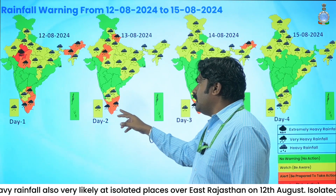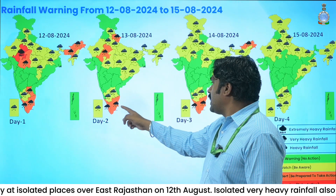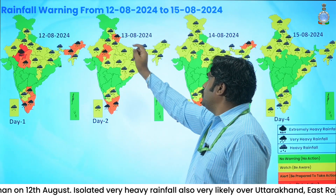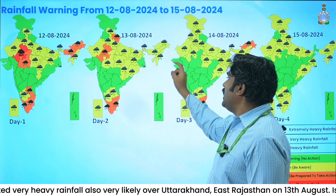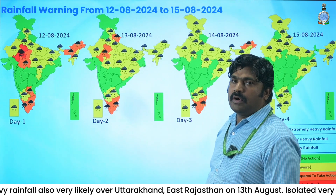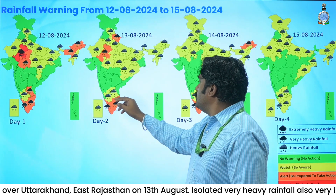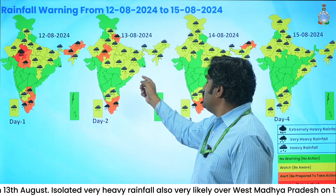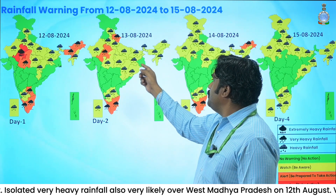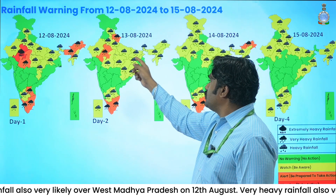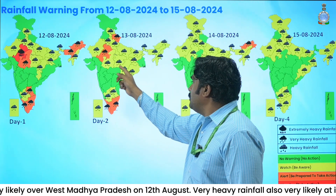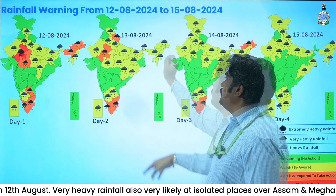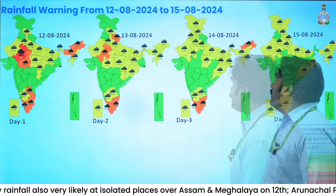For Day 3, very heavy rainfall warnings have been issued over Kerala, Tamil Nadu, east Rajasthan, and Uttarakhand. Heavy rainfall warnings have been issued over south interior Karnataka, Rayalaseema, Chhattisgarh, Bihar, Jharkhand, Uttar Pradesh, Madhya Pradesh, west Rajasthan, and the northeastern states.